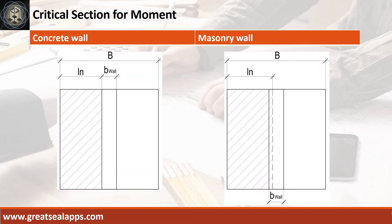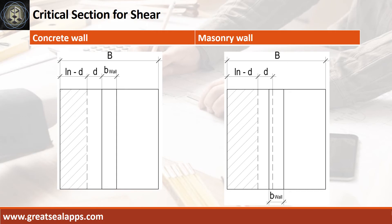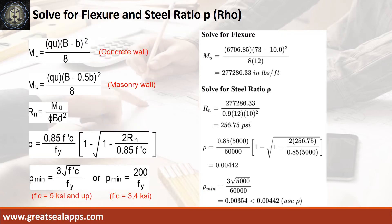Critical section diagrams for moment evaluation. Critical section diagrams for shear evaluations. Given ultimate soil pressure of 6,706.85 PSF, footing width of 73 inches, and concrete wall thickness of 10 inches, the maximum moment is 277,286.33 inch-pounds per foot.